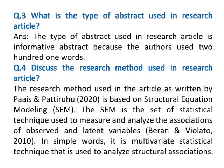Question three: What is the type of abstract used in the research article? The answer is the type of abstract is an informative abstract because the authors used 201 words. Question four: Discuss the research method used in the research article. The answer is the research method used in the article by Pariz and Pataruhu (2020) is based on structural equation modeling (SEM).